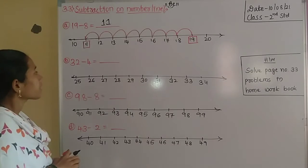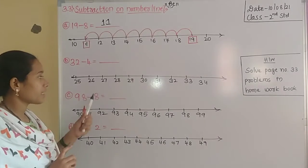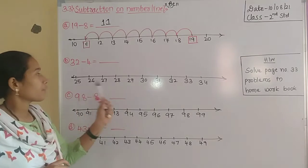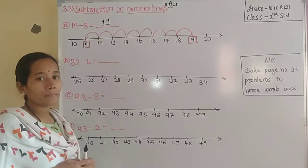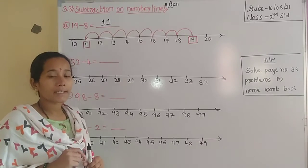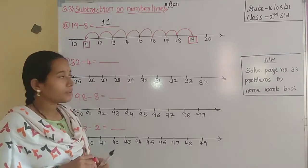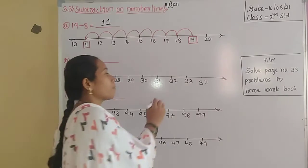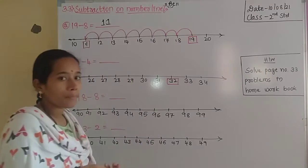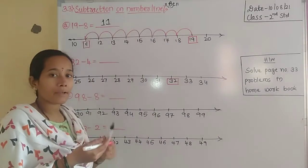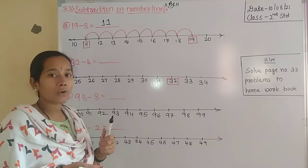Next, see the second problem: 32 minus 4 equals dash. The number line given here goes from 25 to 34. The first step is to mark the minuend on the number line. The minuend is 32, so mark 32 on the number line. The next step is to move backward — how many steps? 4 steps, because the subtrahend is 4.